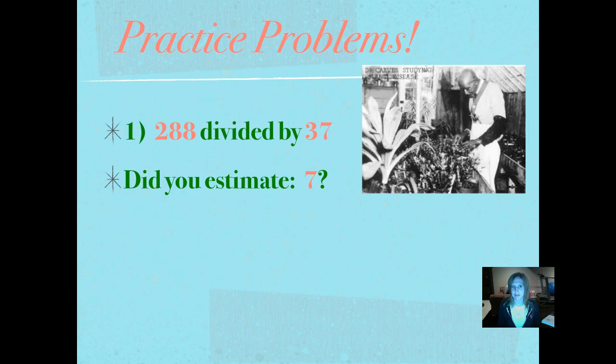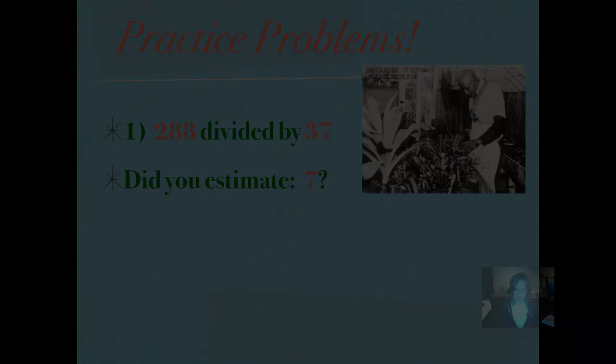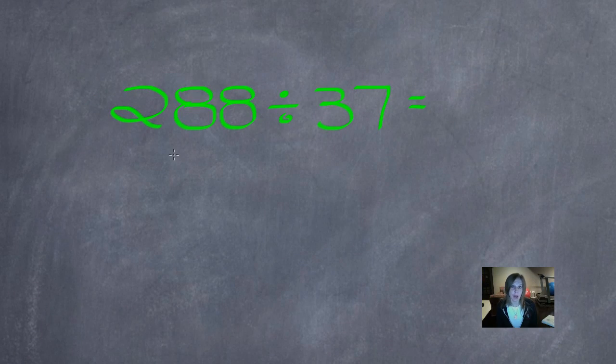Did you estimate 7? Let's see how we did that. So remember, the first step in using compatible numbers to find out about how many times 288 would be divided by 37 is to round the divisor, which is what it's divided by, to the greatest place value position.